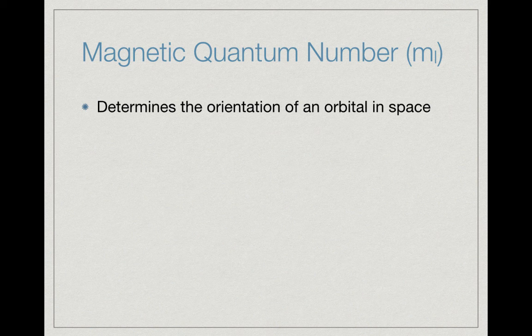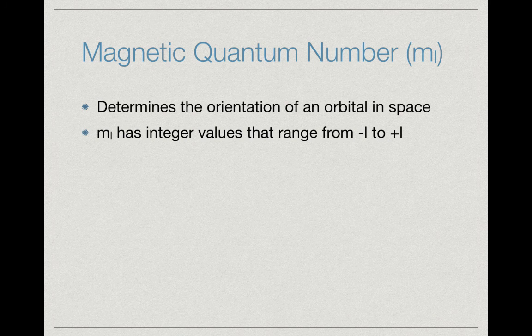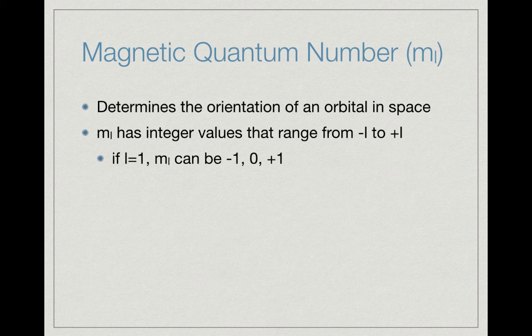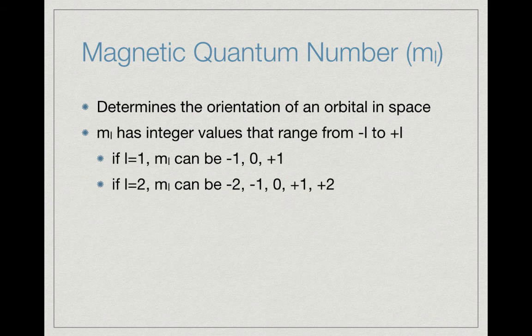The next quantum number is the magnetic quantum number m sub l, which determines the orientation of a particular orbital in space. It has integer values that range from negative l to positive l. For example, for a p orbital where l equals 1, m sub l can be minus one, zero, and plus one—three different values. If l were equal to two, then m sub l could be minus two, minus one, zero, plus one, and plus two.